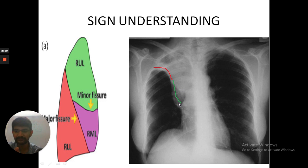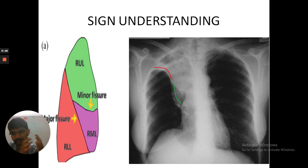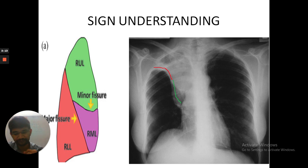On the contrary, on the left side, when there is a left upper lobe collapse, we call it the Luftsichel sign, which will be covered in the next coming part.